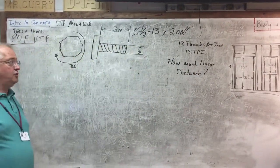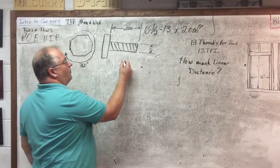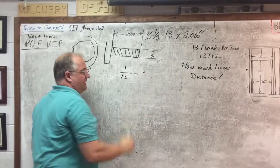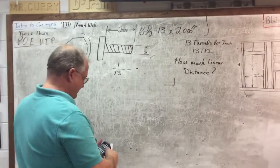So we will take one divided by 13. Let me get my calculator out, but it's going to be around 77 thousandths of an inch.